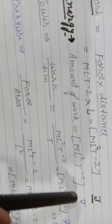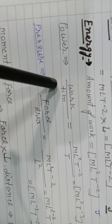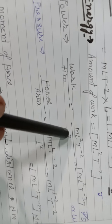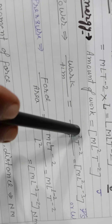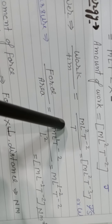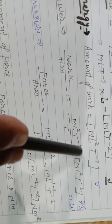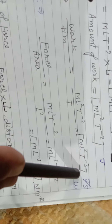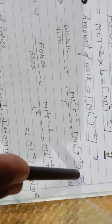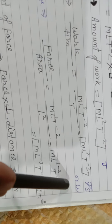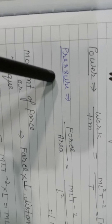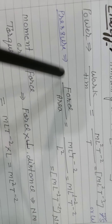Energy has dimension [ML²T⁻²]. Power equals work upon time. Work has dimension [ML²T⁻²], divided by T, so Power = [ML²T⁻³]. Its unit is joule per second, which we call watt.